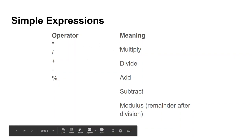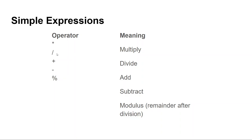Our operators: multiply is a star, divide is a forward slash, add is plus, subtract is minus. The modulus is something totally different and useful in programming — you've probably never seen it in math. A modulus is just another operator but it returns the remainder. So if you did 10 modulus 3, you would get 1. It returns the remainder of a division problem. It's very, very useful.